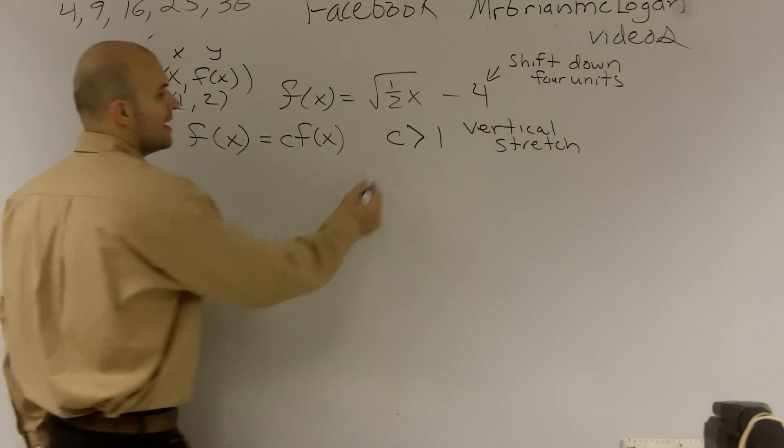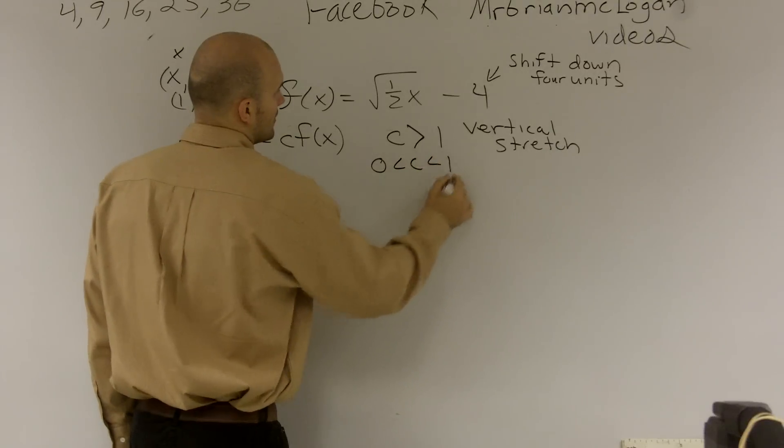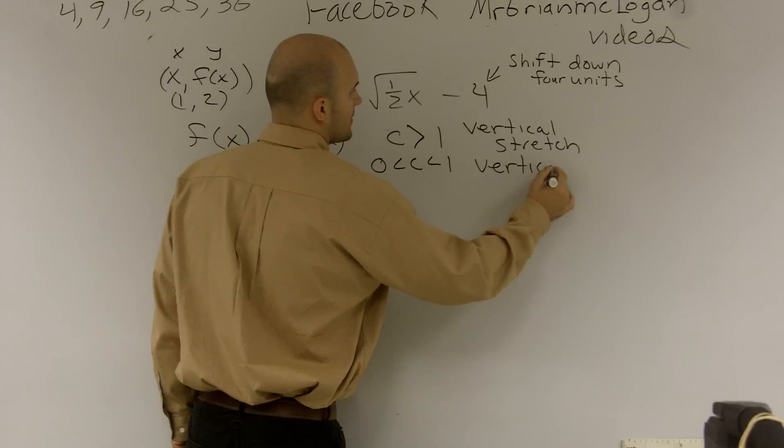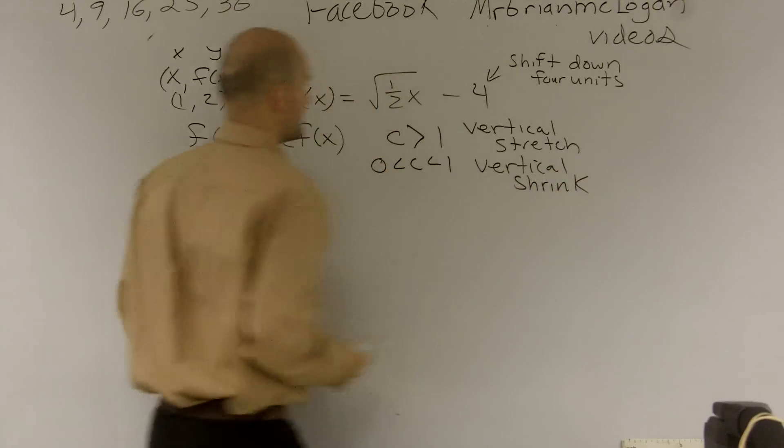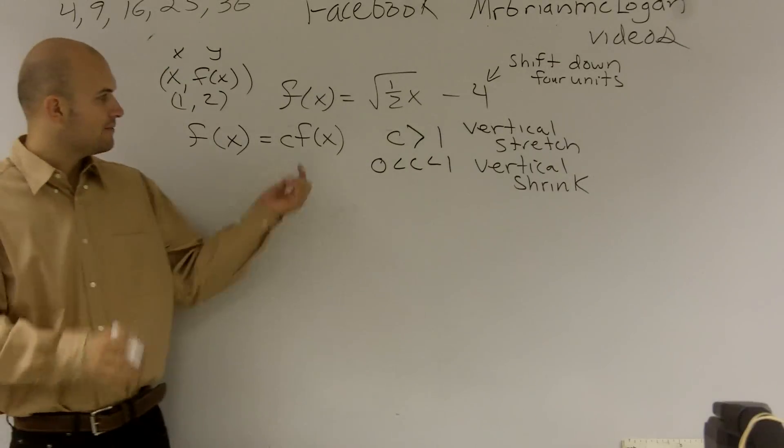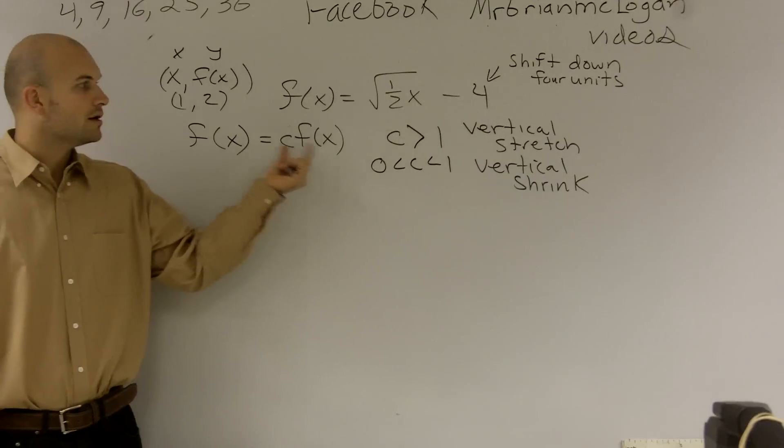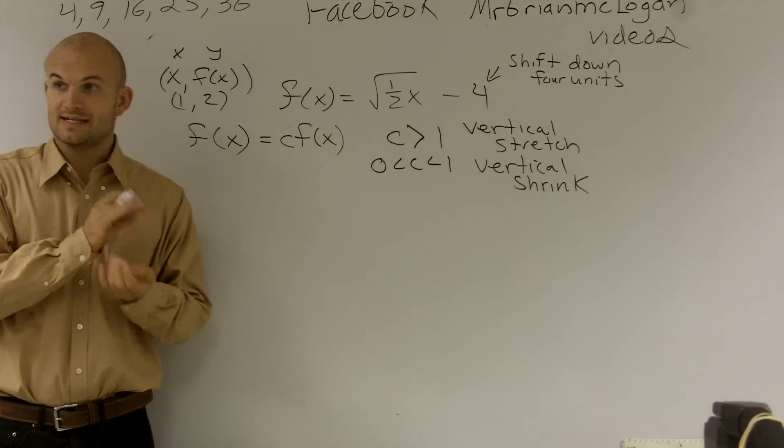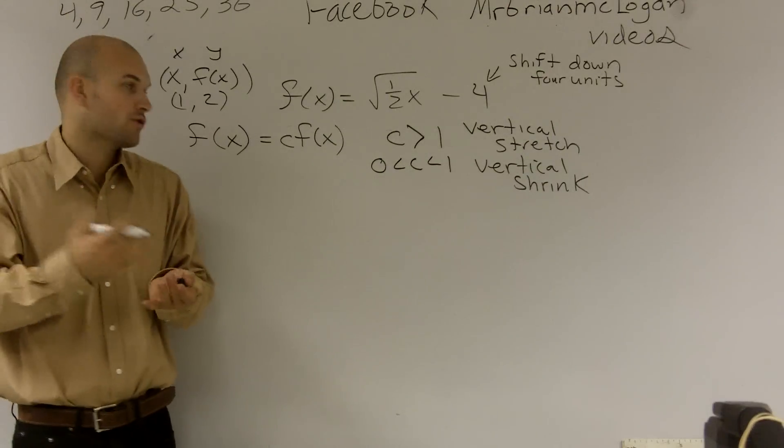And then if c is less than or equal to 1, it's going to be a vertical shrink. Okay? So you guys have to understand when I'm multiplying a constant by my function, that is going to change vertically the points. Okay? It's actually going to stretch or shrink your y coordinates or your output coordinates.